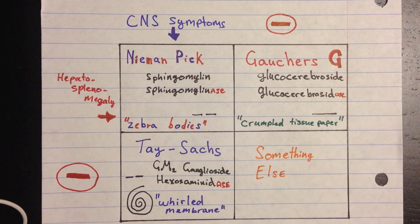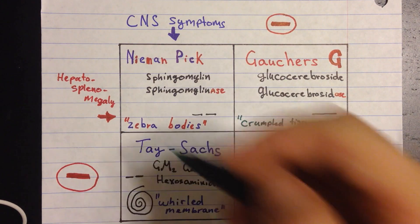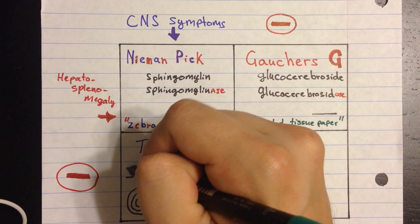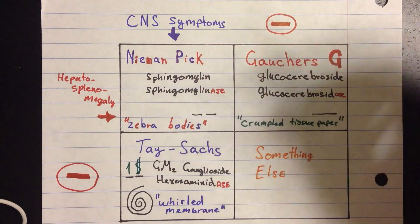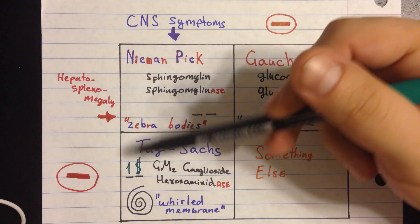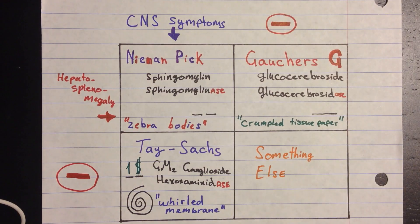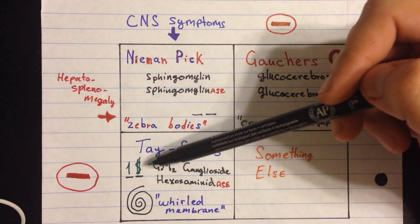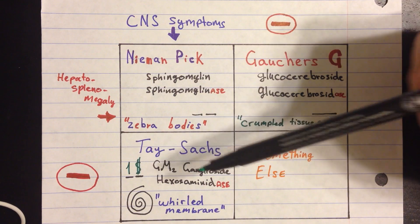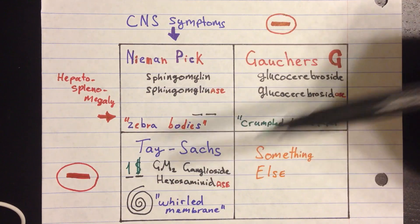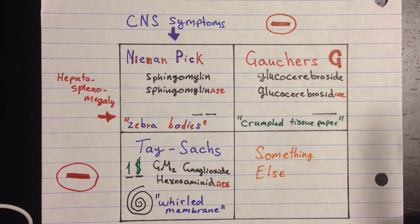The keyword for Tay-Sachs will be whorl membranes. Now, if they ask you what happened to this patient and how they got this, we're going to write one dollar sign — because it's loopy, that's why we write a weird symbol. One dollar, why? Because it looks like 15, and this disease is found on chromosome 15.